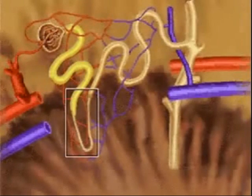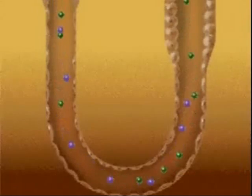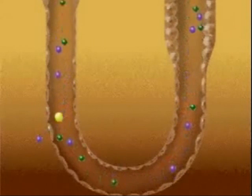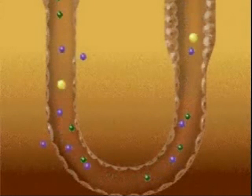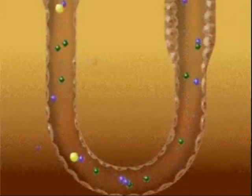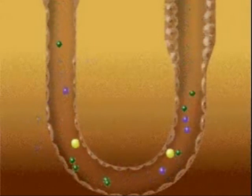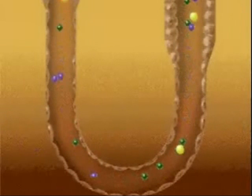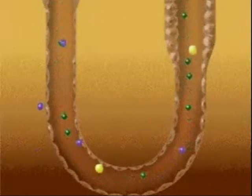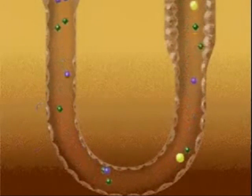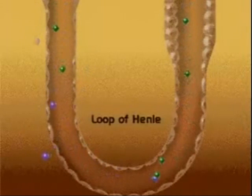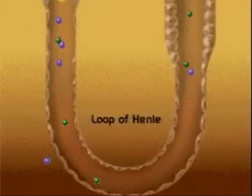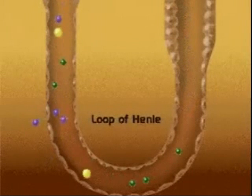Urine passes into the proximal convoluted tubule, then into the nephron loop. The nephron concentrates urine by the process of the counter-current multiplication system, which is the means by which water and sodium are extracted from the filtrate as it passes through the tubules toward the collecting ducts. This system is called counter-current because of the dynamics set up by the hairpin turn of the loop of Henle.